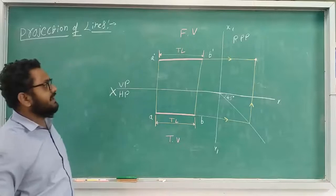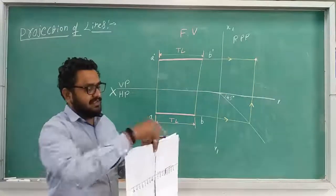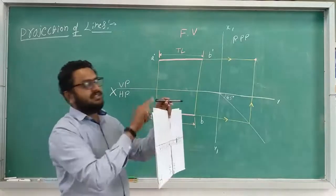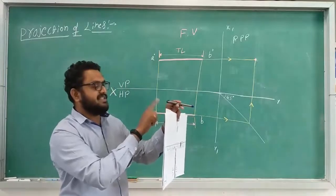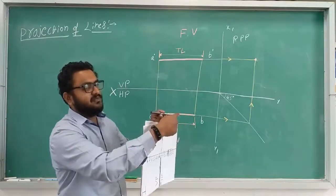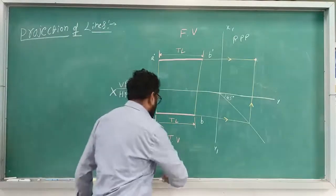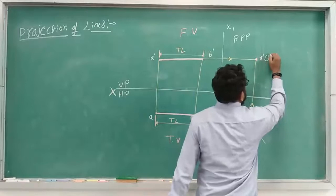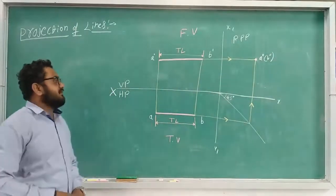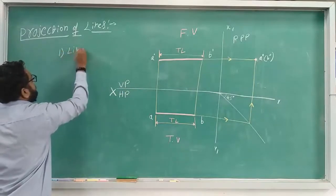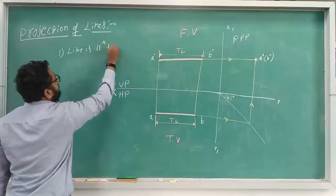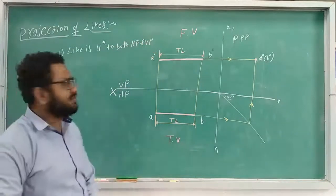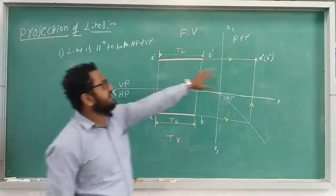The side view is just a dot. For naming: the line has two ends, A and B, but only one end is visible from the side. When seeing from the side, A is the first point visible and B is hidden behind it. Whichever point you see first is written first, and the hidden point is written in brackets. So the side view is named A-double-dash with B-double-dash in brackets. This concludes the first case: when the line is parallel to both HP and VP, this is how the front view, top view, and side view look.